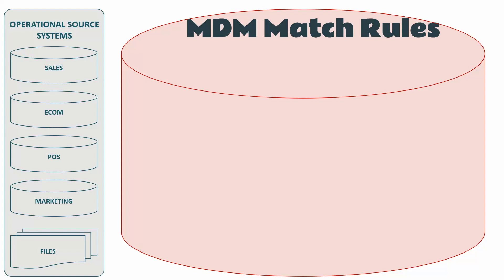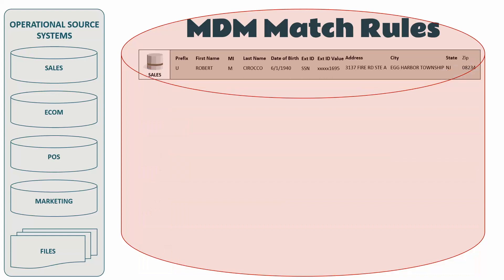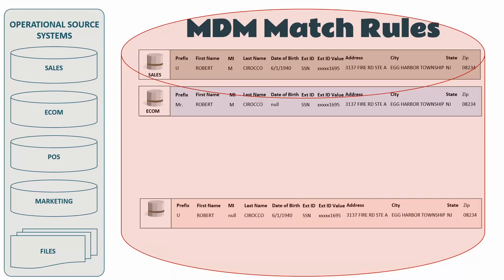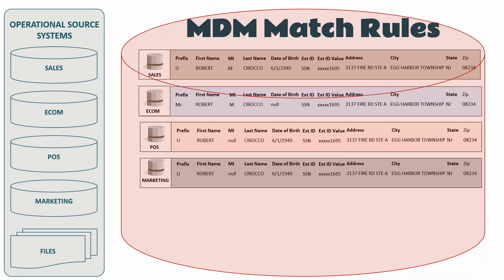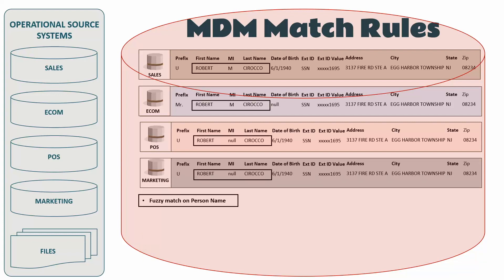Let's take an example — this is a continuation of my earlier representation for data integration and the data warehouse. I have five different sources from my operational source systems: sales, e-commerce, point of sale, marketing, and certain flat files. For now I'm ignoring the flat file source. The data coming from sales and e-commerce represents the same person, so I need to apply MDM matching rules on top of all four records to create a best version of truth.